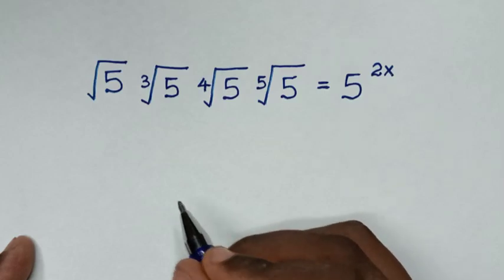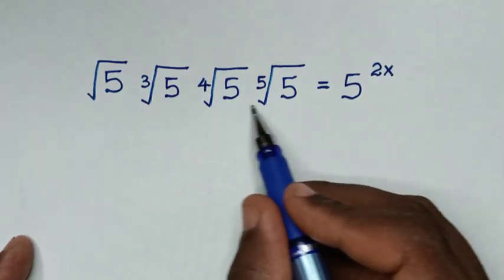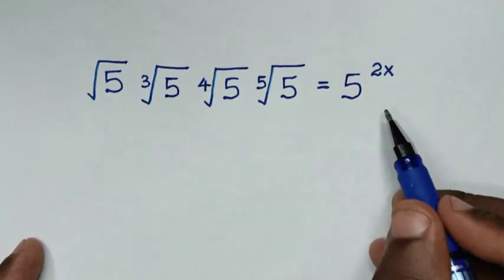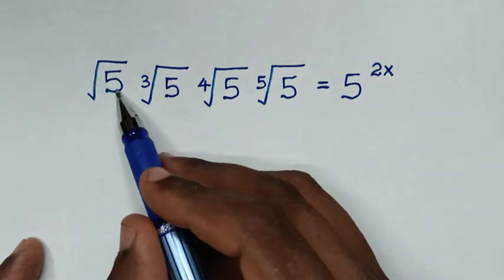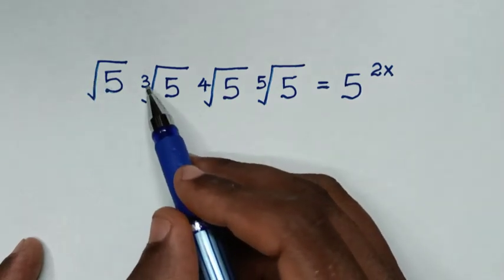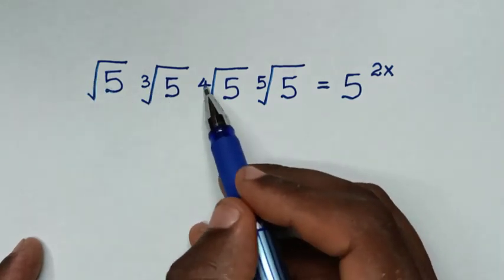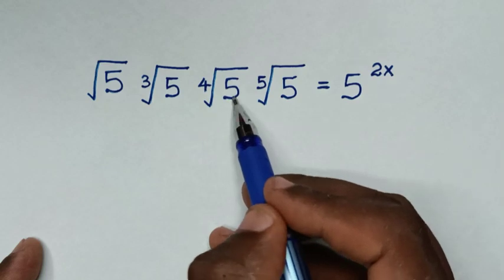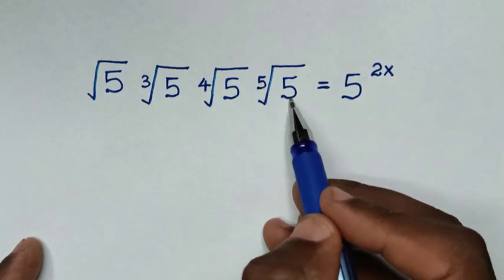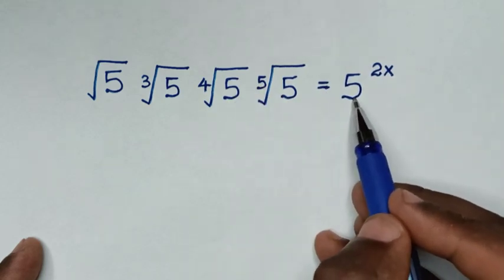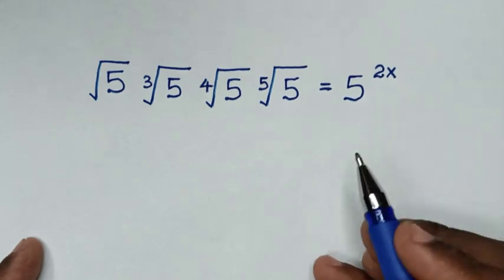Hello, you are welcome to solve this math problem, which is: square root of 5 times third root of 5 times fourth root of 5 times fifth root of 5, is equal to 5 to the power of 2x.